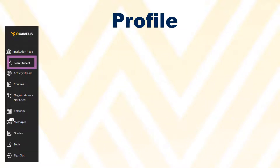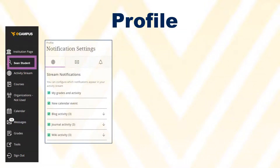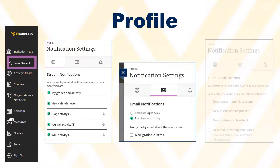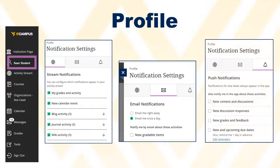You can specify what type of content you want to be notified about in your activity stream, how frequently to receive emails, and what type of push notifications to receive on a mobile device.